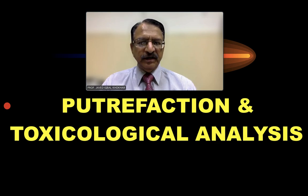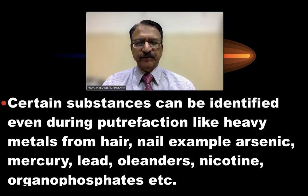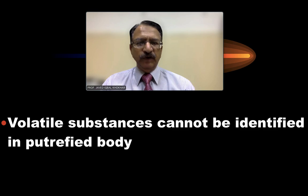Putrefaction will interfere with toxicological analysis. However, certain substances can still be identified during putrefaction, such as heavy metals from hair and nails — for example, arsenic, mercury, lead, oleander, nicotine, and organophosphorus compounds. Volatile substances, however, cannot be identified in putrefaction.